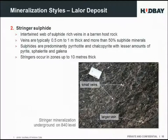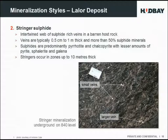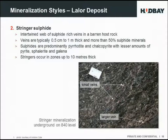The second mineralisation type at Lawler is the Stringer sulphide. This is a picture from underground of a face. Stringer sulphide is basically a web of sulphide-rich veins in a barren host rock. Veins are typically half a centimetre to a metre in thickness, more than 50% sulphides, predominantly pyrrhotite and chalcopyrite with lesser amounts of sphalerite, pyrite and galena. These Stringer zones can be up to ten metres thick and are assumed to be fairly continuous conductive lenses.